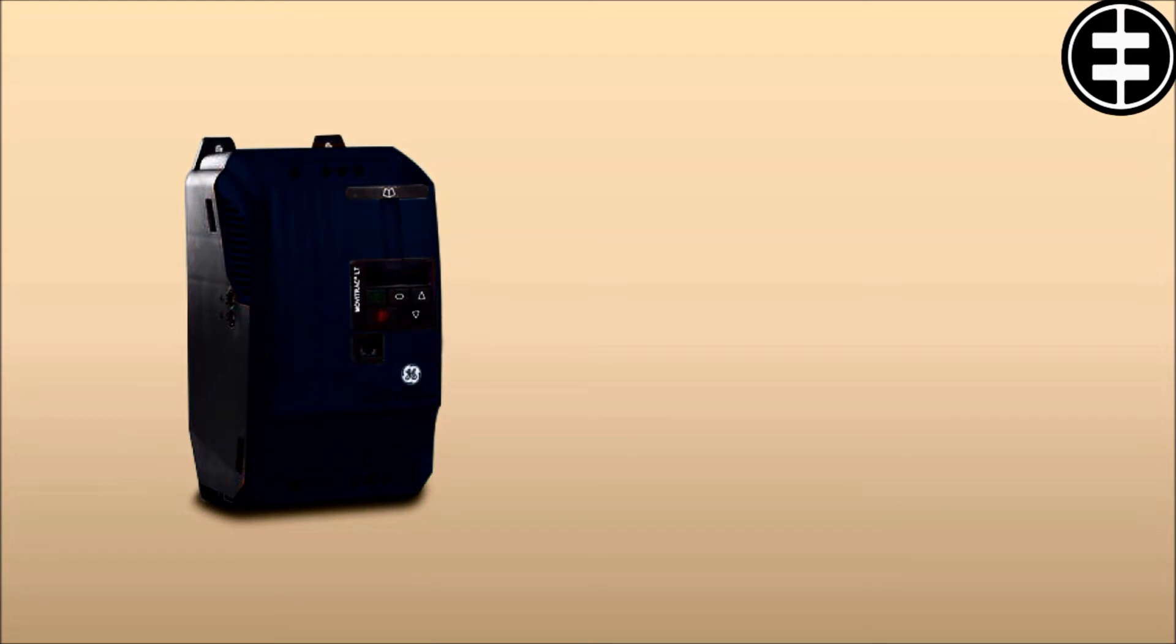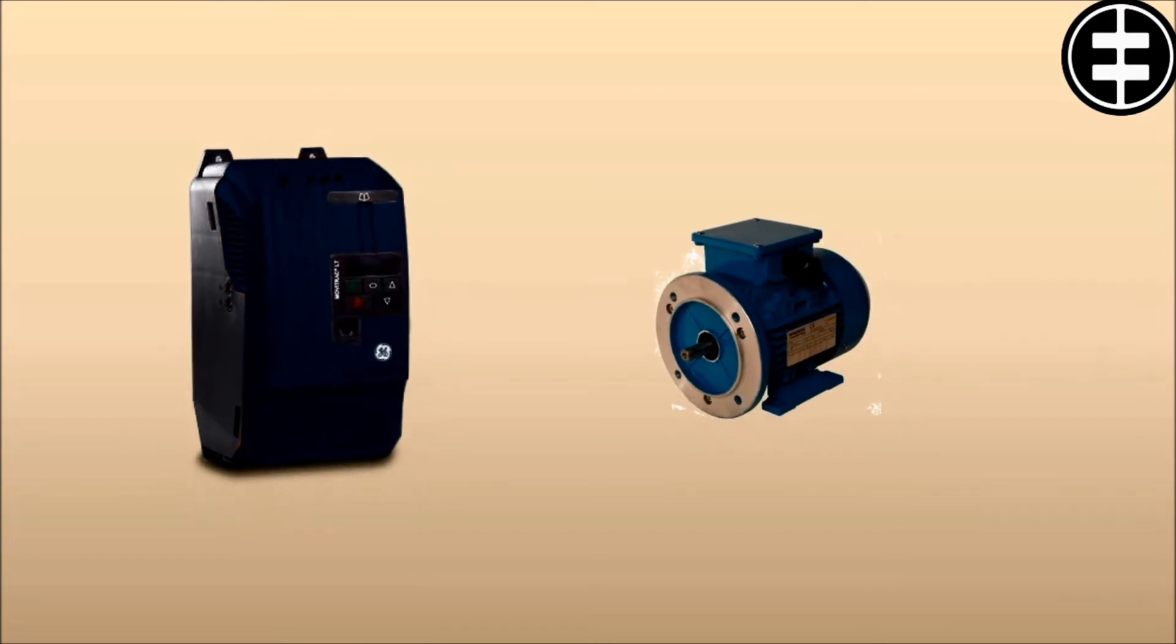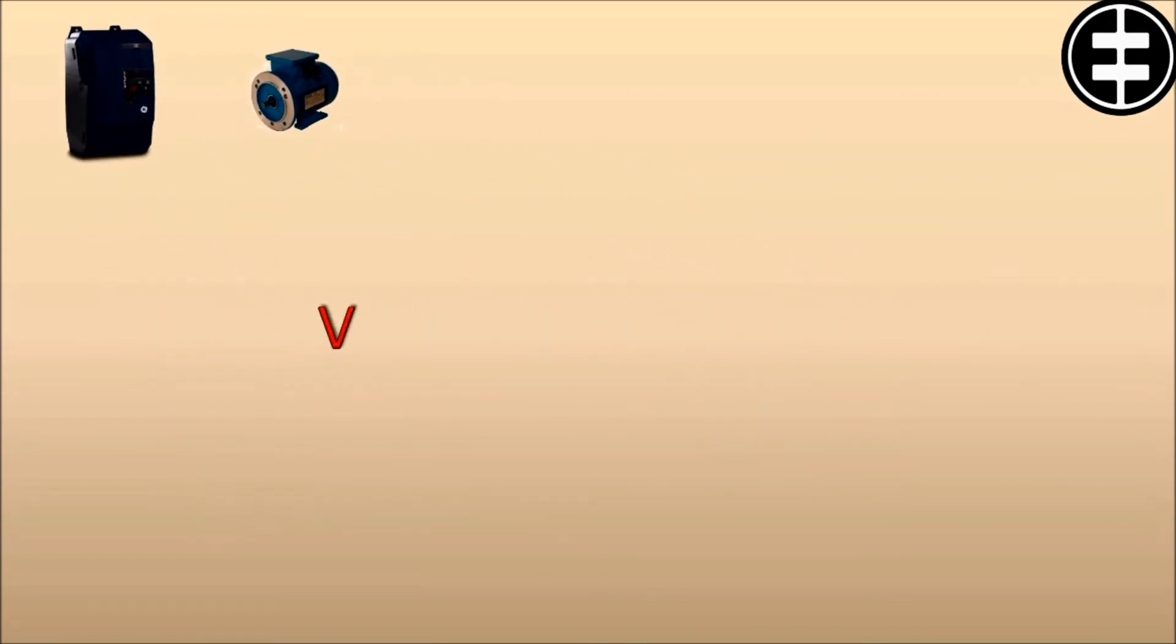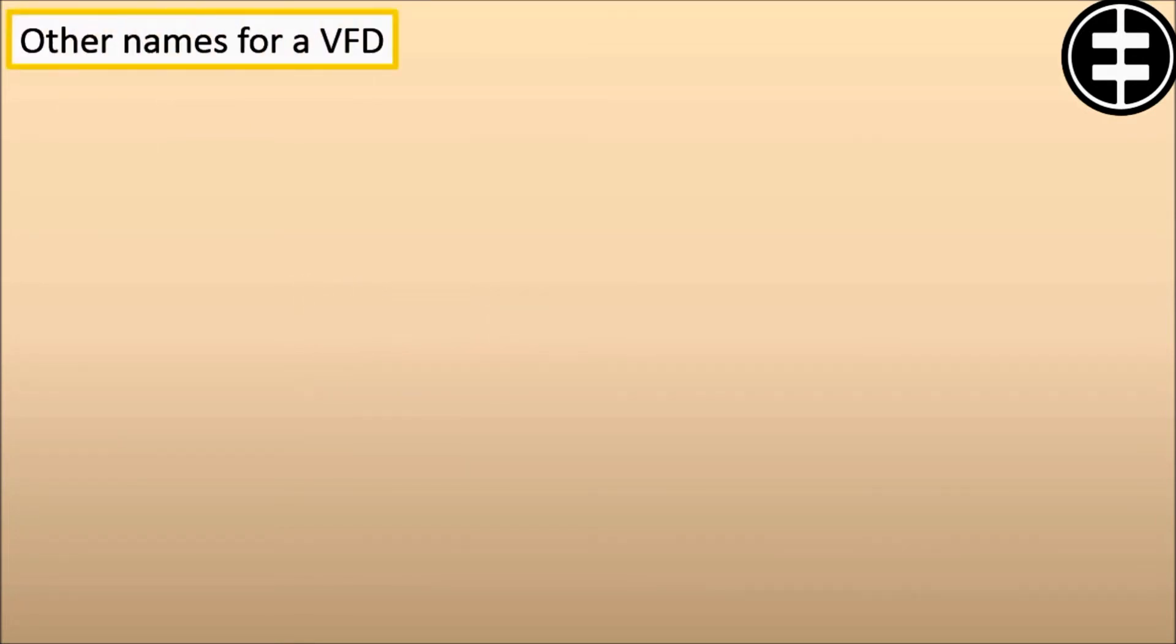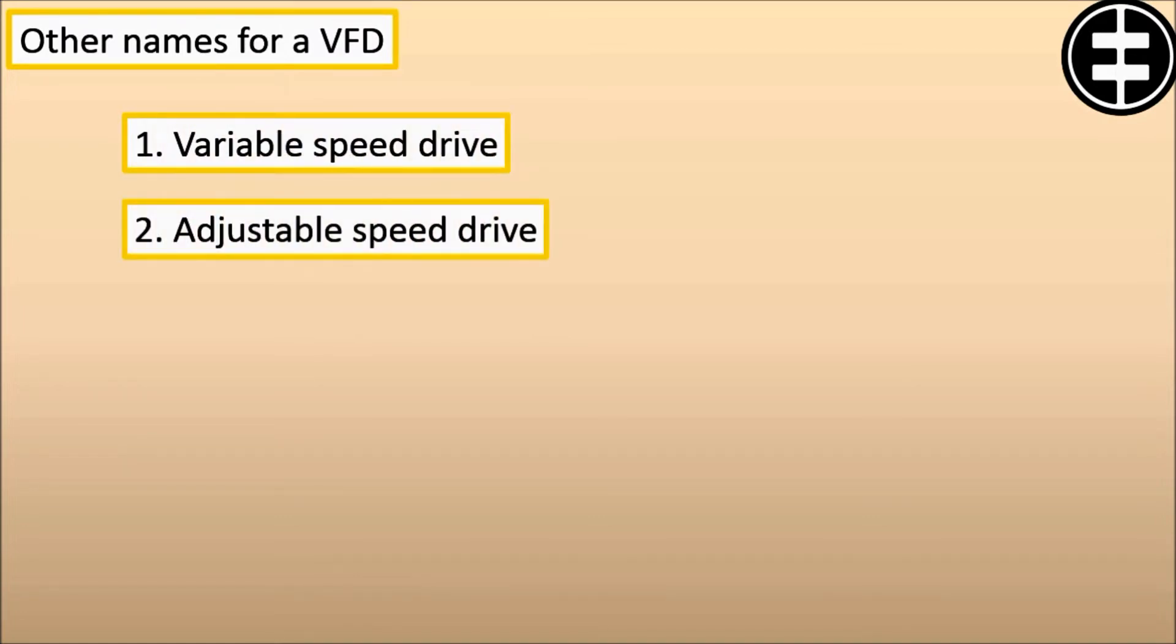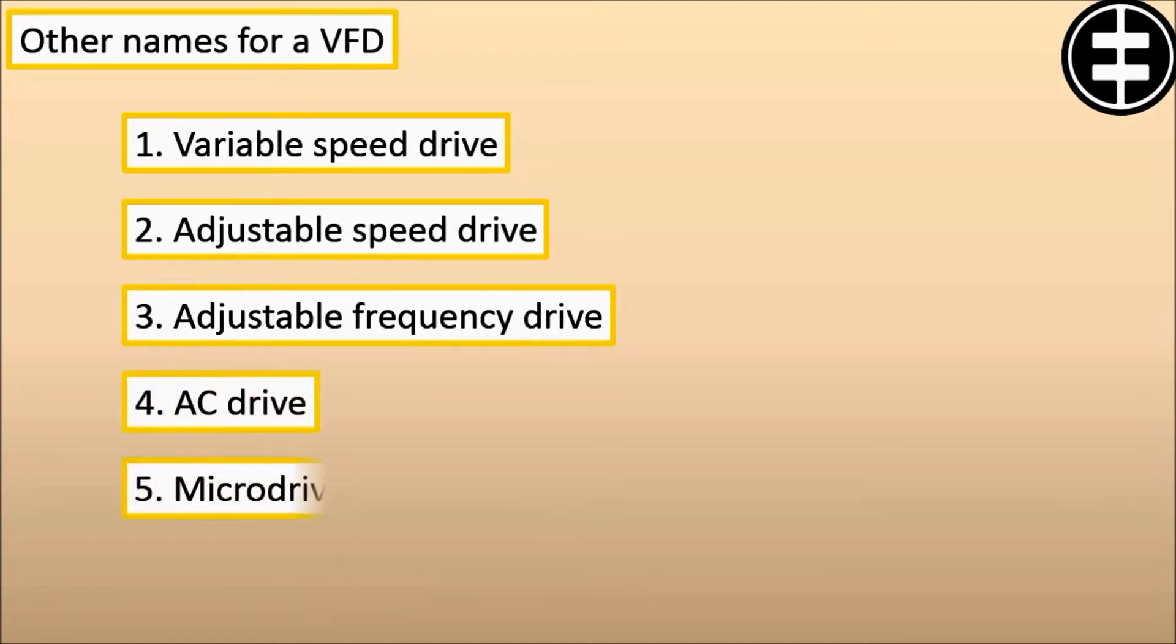So now, how could we define the VFD? A variable frequency drive is a type of motor controller that drives an electric motor by varying the frequency and voltage supplied to the electric motor. Other names for a VFD are variable speed drive, adjustable speed drive, adjustable frequency drive, AC drive, micro drive, and inverter.